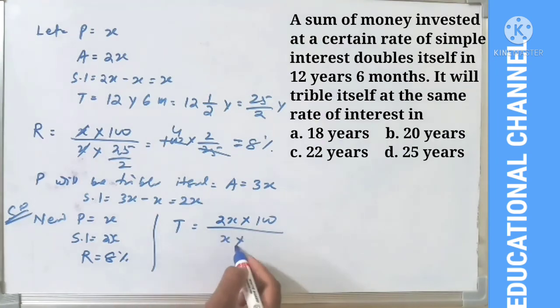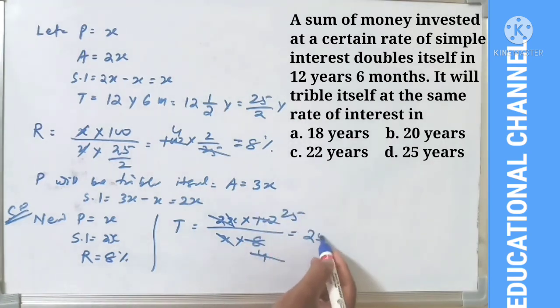Simplifying: T = 200/8 = 25 years. Therefore, the answer is 25 years.